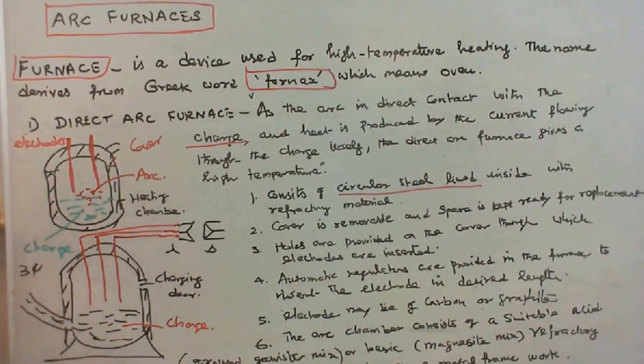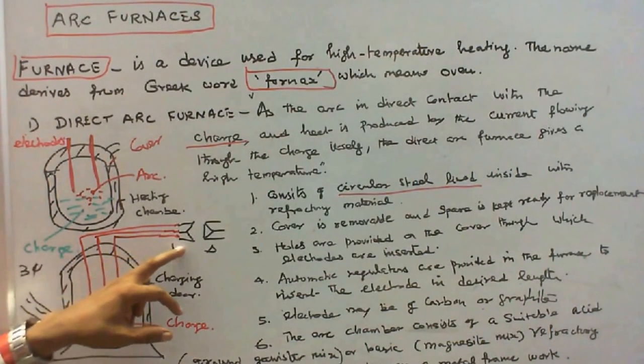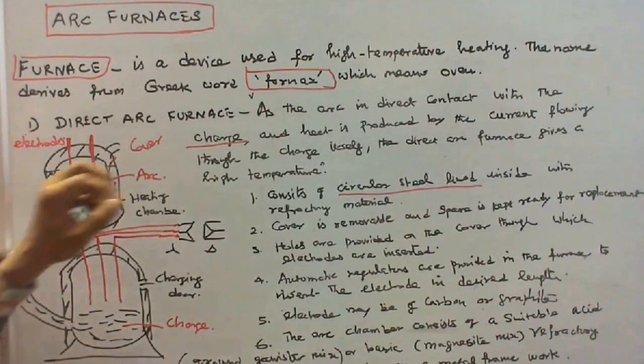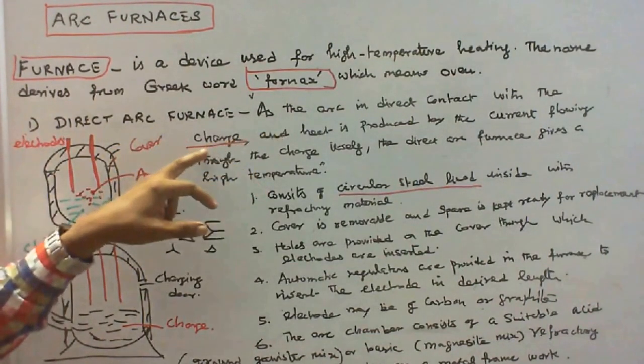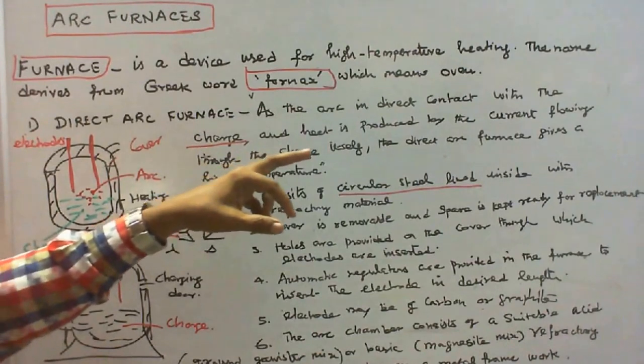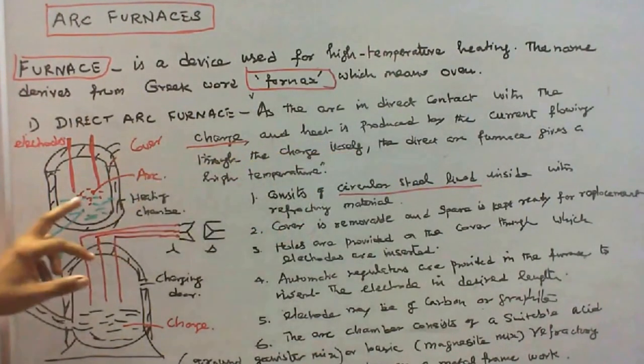Or you can use a DC supply. In three phase we are using three electrodes which are connected in star. As the arc is in direct contact with the charge and the heat is produced by the current flowing through the charge itself.